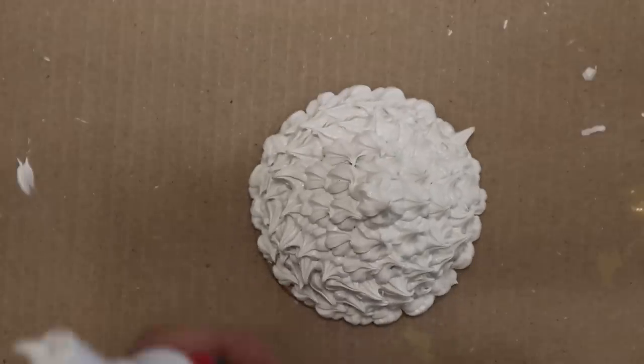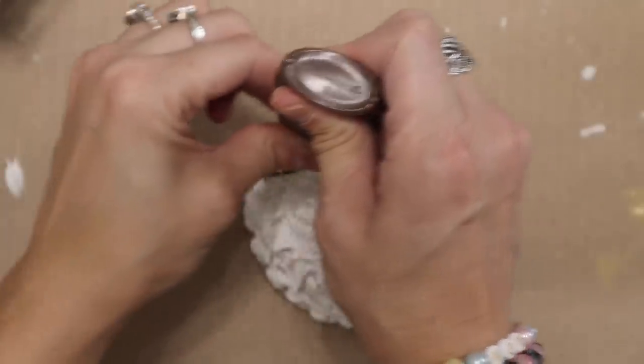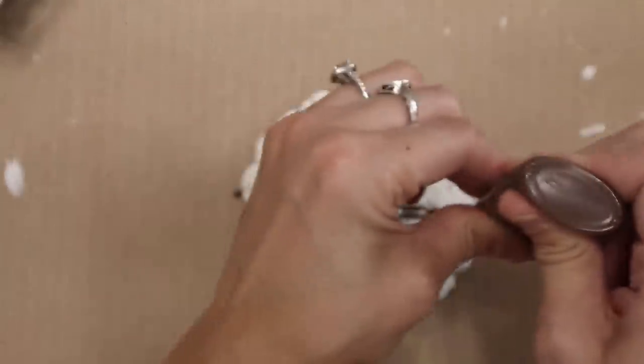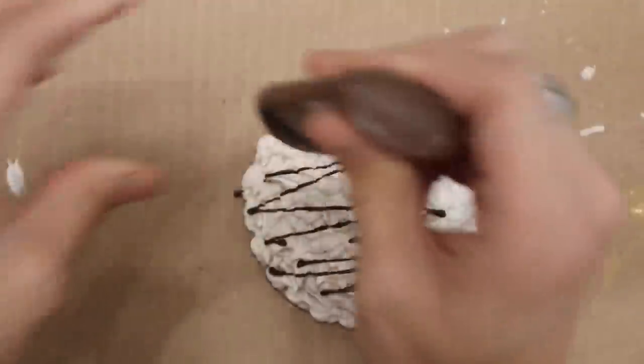This is what it looks like when I just had a tiny bit left for this one. Now I am going in with this Tulip puffy fabric paint just to make a fun little chocolate drizzle over the top.